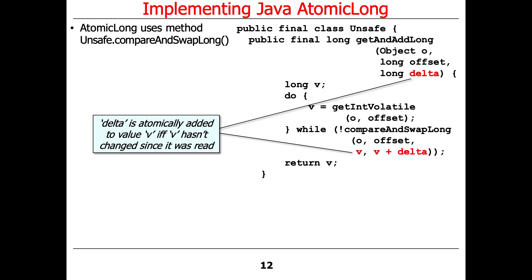There is no single lock held across this entire method — the whole method is not a critical section. Only reading something atomically is atomic, and only the compareAndSwapLong is atomic if and only if the expected value equals the current value. That's why it's done in this very subtle way.